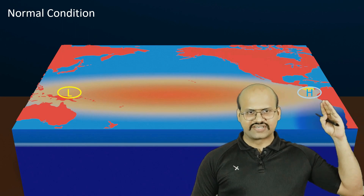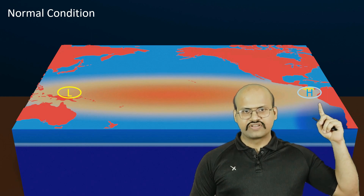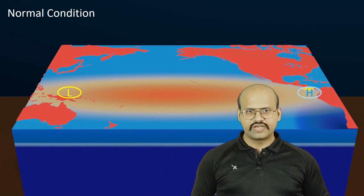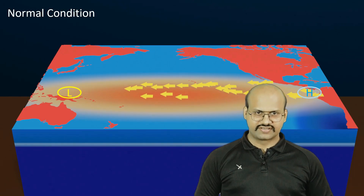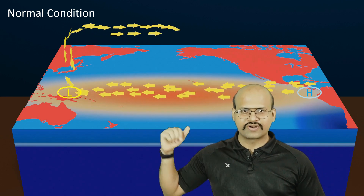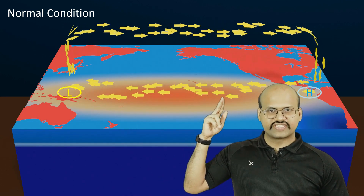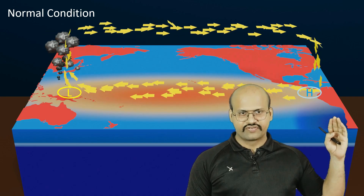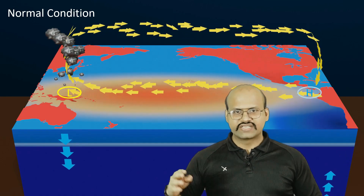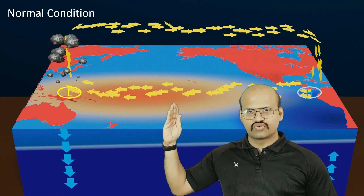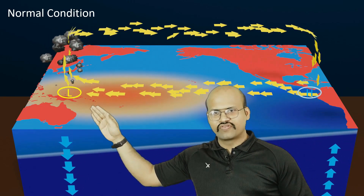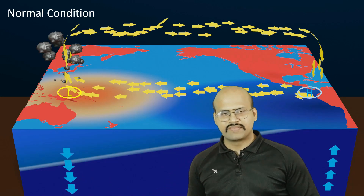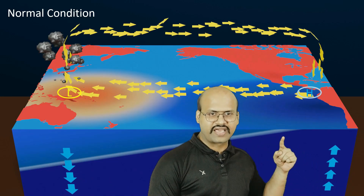There is a high pressure region towards the South American side of the South Pacific Ocean and a low pressure region towards the Australian side. Wind moves from higher pressure to lower pressure, so a wind current moves in that direction. This wind current drags the warmer water towards the Australian side and also pulls colder water from the South American coast. As the warmer water moves towards Australia its amount increases and we see the thermocline moving downwards.